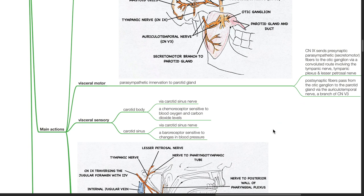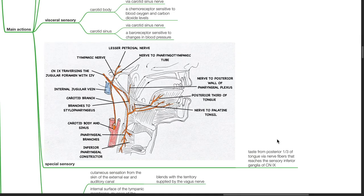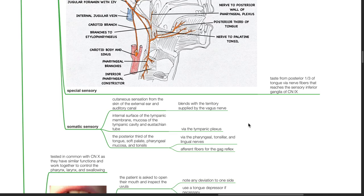Cranial nerve 9 receives viscerosensory input from the carotid body via the carotid sinus nerve. The carotid body is a chemoreceptor sensitive to blood oxygen and carbon dioxide levels. Cranial nerve 9 also receives viscerosensory input from the carotid sinus via the carotid sinus nerve; the carotid sinus is a baroreceptor sensitive to changes in blood pressure. Additionally, cranial nerve 9 receives taste sensation from the posterior one-third of the tongue via nerve fibers that reach the inferior ganglia of cranial nerve 9. Cranial nerve 9 also receives somatic sensory input — cutaneous sensation from the skin of the external ear and auditory canal.